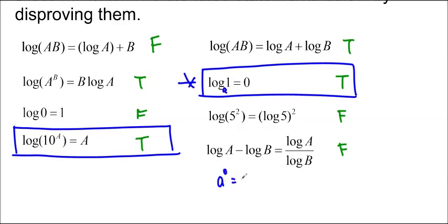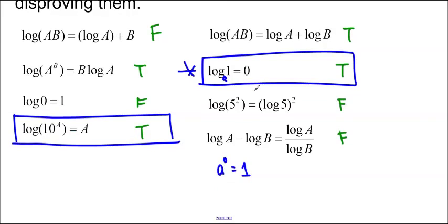We know that a to the 0 is equal to 1, right? No matter what the base is. And so if I just change this into logarithmic form, I'll get log base a of 1 is equal to 0. And there you go. We already have the rule.